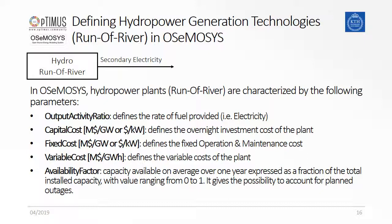The fixed costs reflect the cost related to the operation and maintenance of the power plant and are defined per kilowatt or per gigawatt and year. Variable costs represent costs that occur only while the technology is under operation. For hydro power plants, these are often zero, but it depends on the reporting scheme.